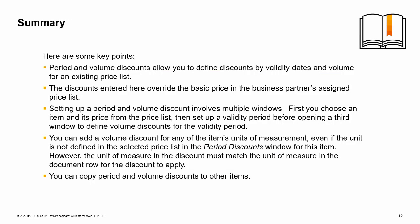Period and volume discounts allow you to define discounts by validity dates and based on volume for an existing price list. The discounts entered here override the basic price in the business partner's assigned price list. Setting up a period and volume discount involves multiple windows: first you choose an item and its price from the price list, then set up a validity period before opening a third window to define volume discounts for the validity period. You can add a volume discount for any of the item's units of measurement, even if the unit is not defined in the selected price list; however, the unit of measure specified in the discount must match the unit of measure in the document row for the discount to apply. You can copy period and volume discounts to other items, either by selecting all items, specific items, or by using the options to select items without period discounts or items of the same UOM group. You have completed the topic for period and volume discounts. Thank you for your time.